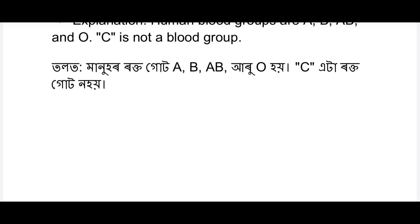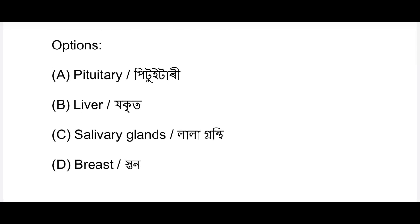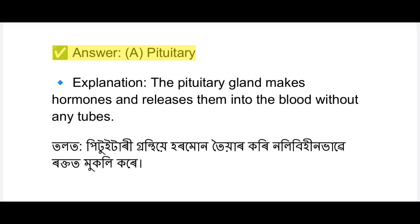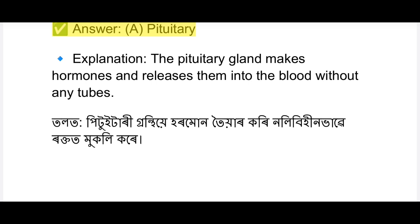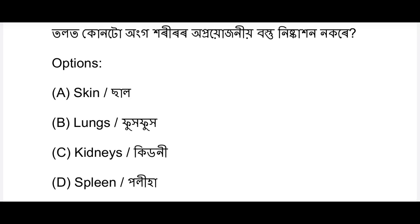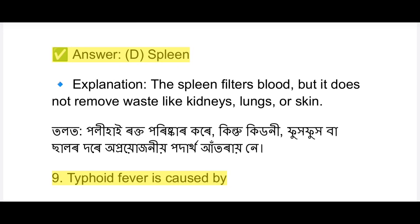Which of the following glands is ductless? The answer is the pituitary gland. The pituitary gland releases hormones directly into the blood without any tubes or ducts. These are called ductless or endocrine glands.